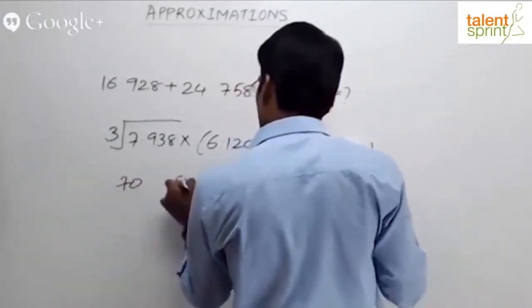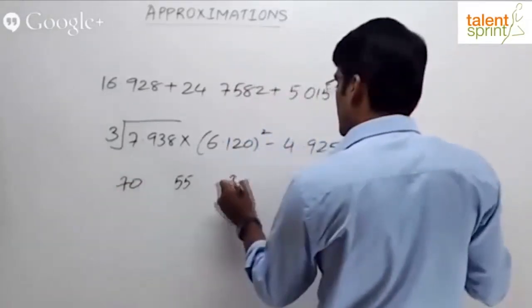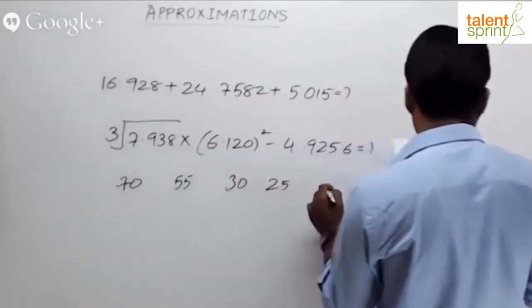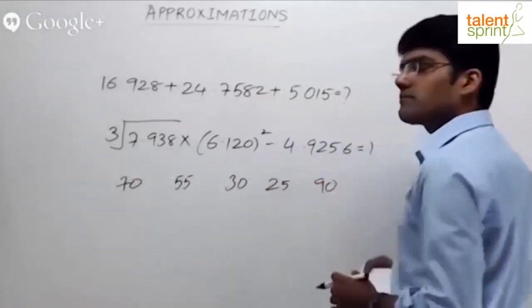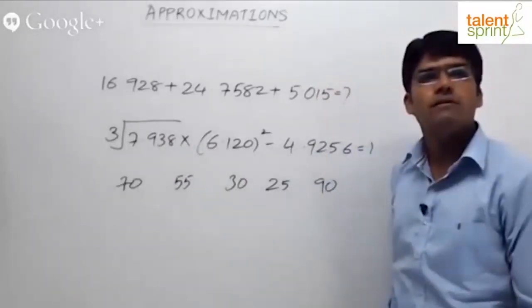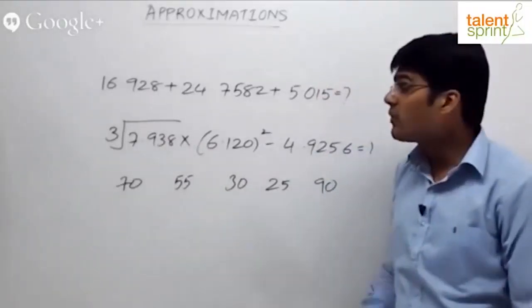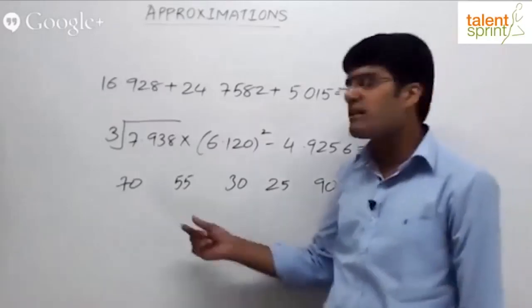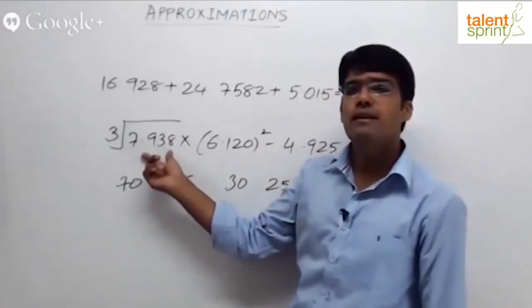Now, cube root of 7.938 - can I take it as approximately 8? What is the cube root of 8? Cube root of 8 is 2, so this part here is approximately 2.